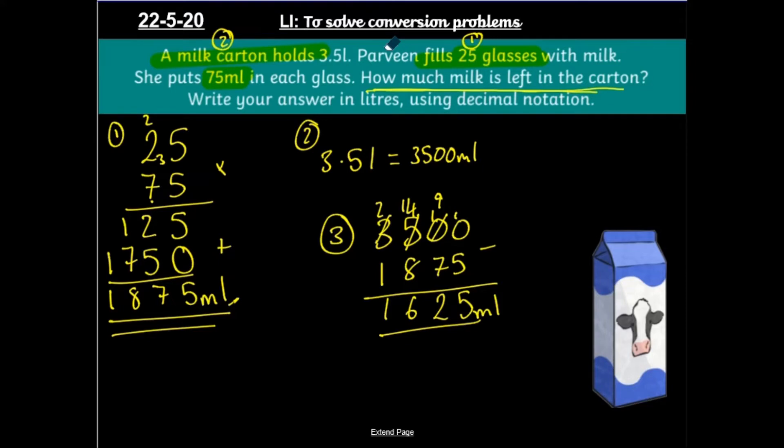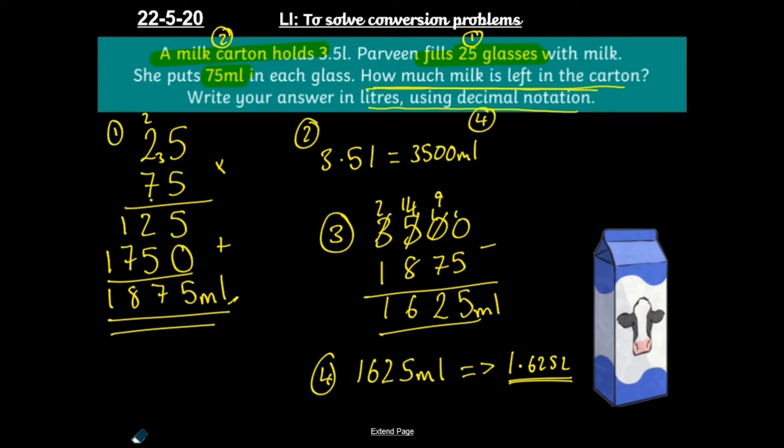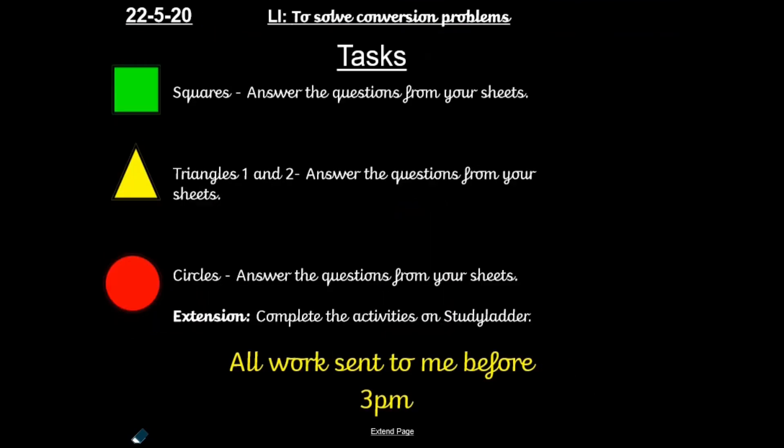Have I finished there? No, because it tells me step number four on this one is to write my answer in litres. So step number four, I have to change 1,625 millilitres into litres. Well, that's divided by 1,000 will give me 1.6. Apologies for that one there. That'll give me 1.625 litres. So how much milk is left in the carton? 1.625. And there we go. So this is now time to have a go at your own work.